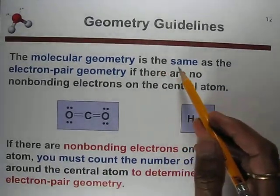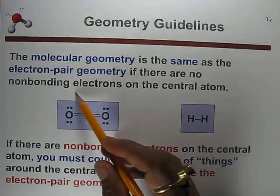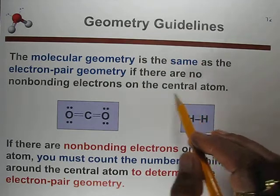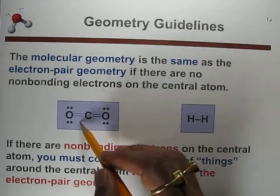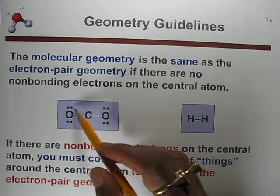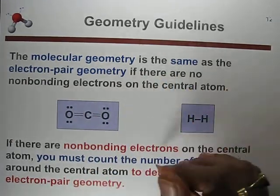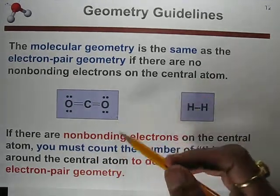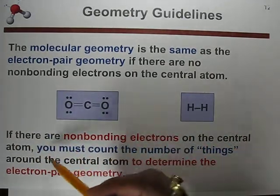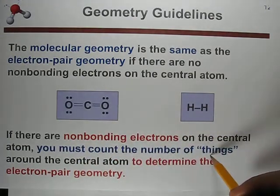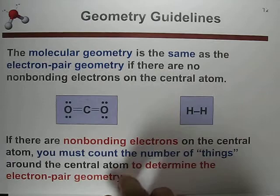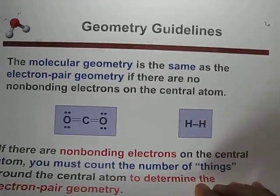The molecular geometry is the same as the electron pair geometry if there are no non-bonding electrons on the central atom. If you see non-bonding electrons on oxygen or nitrogen that are not on the central atom, do not worry about those — they do not influence the 3D shape. Only non-bonding electrons on the central atom affect the electron pair geometry.